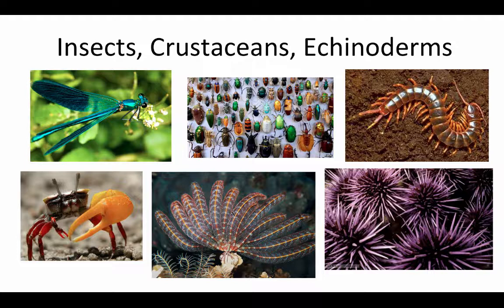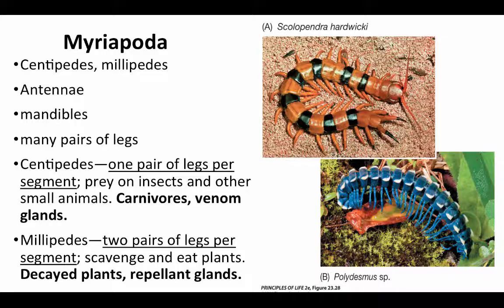In this web lecture, we're going to finish up with the ecdysozoans among the protostomes and start in on the invertebrate deuterostomes. We're going to take a look at insects, crustaceans, and echinoderm diversity. First, before we go into the insects, I want to briefly introduce you to another phylum of arthropods, the myriapods.